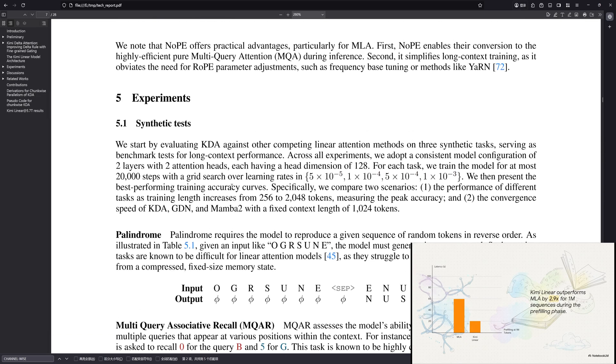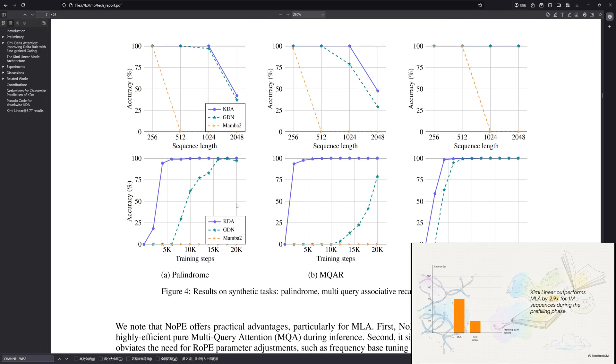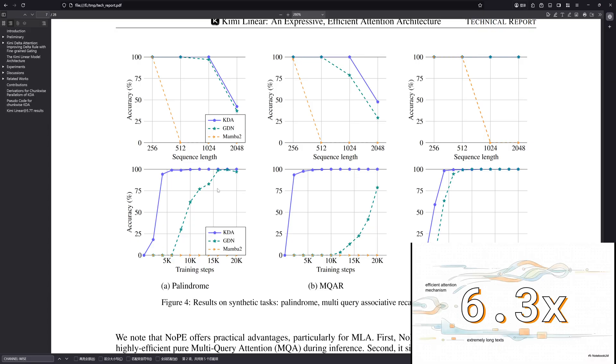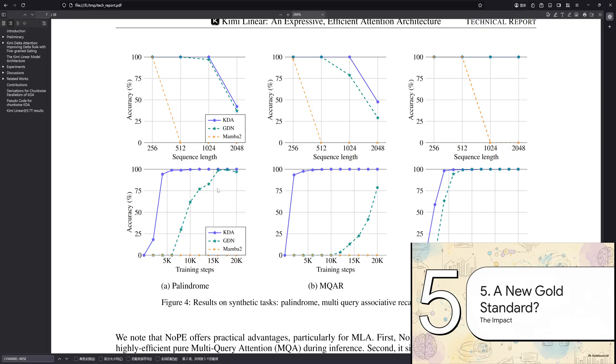And the efficiency gains? They're just staggering. When you ask it to process a million tokens, that's what we call pre-filling, chemilinear is nearly three times faster than the full attention model. It gets the job done in 20 seconds, while the other model is still chugging along at a full minute. But this, this is the number that really makes you sit up. Over six times faster. We're talking about decoding, the process of actually generating the answer. This is a complete game changer for anything that needs to think and respond in real time, like the next generation of AI agents.